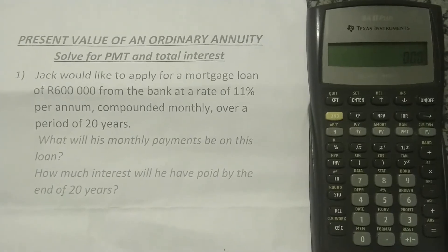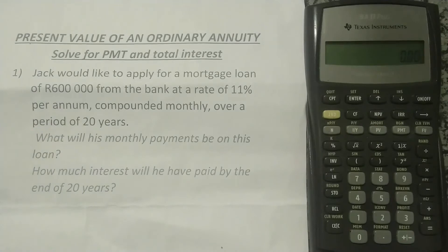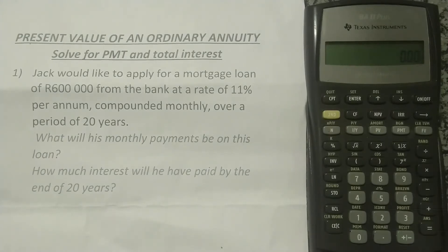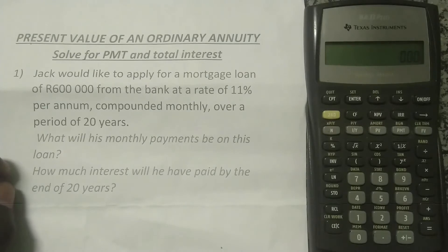Let's first look at our question. Jack would like to apply for a mortgage loan of R600,000 from the bank at a rate of 11% per annum compounded monthly over a period of 20 years. We are asked two questions: what will his monthly payments be, and how much interest will he have paid by the end of 20 years?